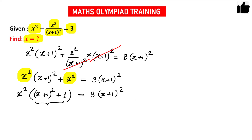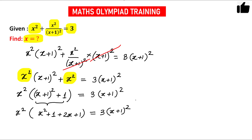Now let us expand the term inside the bracket. Using the formula (a+b)² = a² + 2ab + b², we get x squared times [x squared plus 2x plus 1 plus 1] equals 3 times (x+1) whole squared. So this becomes x squared times (x squared plus 2x plus 2) equals 3 times (x+1) whole squared.